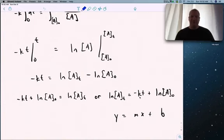We can rearrange this where natural log of At equals minus kt plus natural log of A₀. That's in the form y equals mx plus b, where m is the slope and b is the y-intercept.